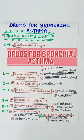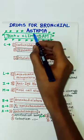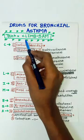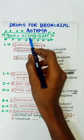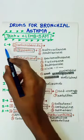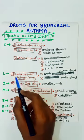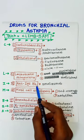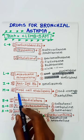Hello guys, welcome to my channel. I am Sudarshan. Today's topic is drugs for bronchial asthma. The trick to remember is CLIMB SAM: C for corticosteroids, L for leukotriene antagonists, I for anti-IgE antibody, M for mast cell stabilizers, and B for bronchodilators.